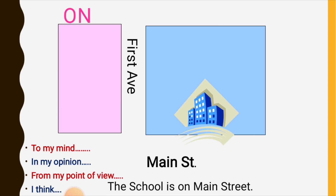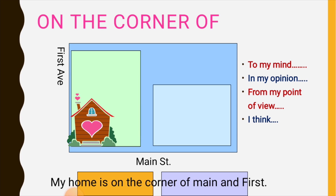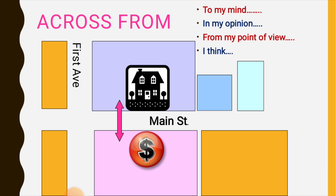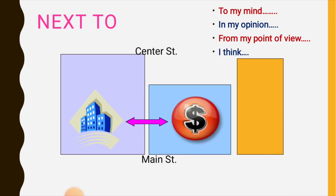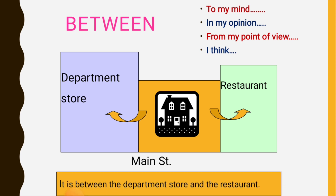The school is on Main Street, on the corner of. My home is on the corner of Main and First Street. Across from — it's across from the bank. Next to — it's next to the bank. Between — it is between the department store and the restaurant.